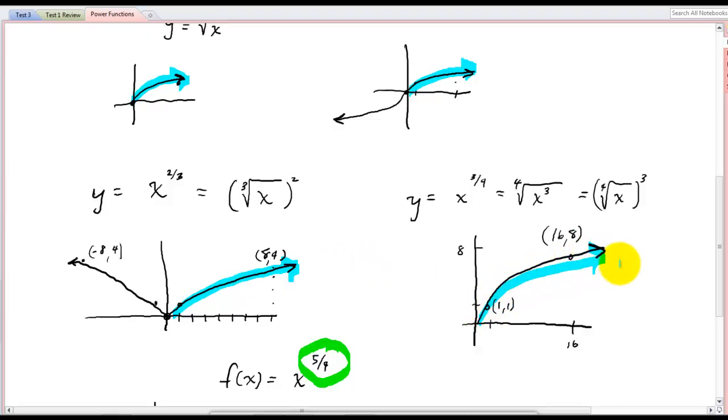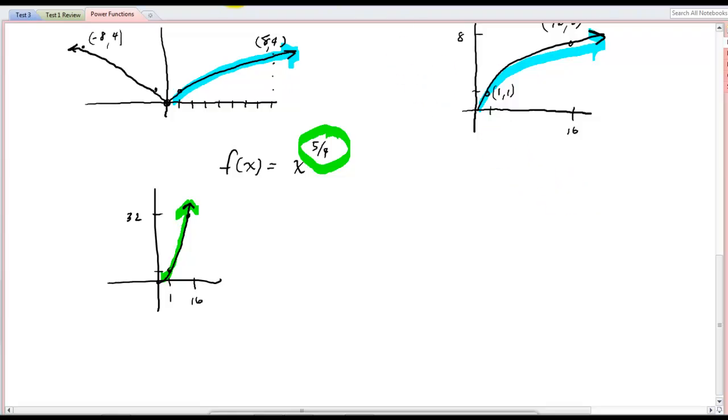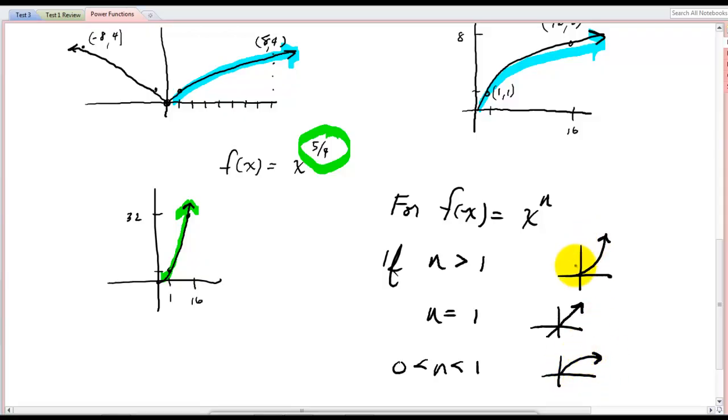So you have those cases. For f of x equals x to the n, if n is greater than 1, looks like that. If n equals 1, looks like that. If n is between 0 and 1, looks like that. And I'm just drawing the first quadrant. I'm not mentioning what happens in the others, because that depends on the symmetry, whether it's an odd or an even function. Alright, so those are our power functions.